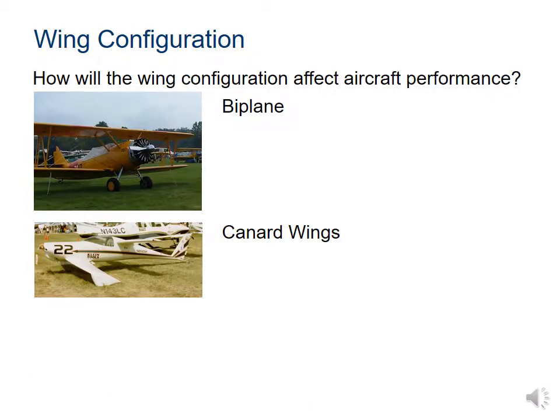Aside from wing position — low, medium, or high — we can also have different configurations. A biplane has two wings stacked one over the other. A canard — another French word — has a significant amount of lift from a secondary pair of wings, with a main wing in front and a second one right behind the cockpit, but it doesn't have a horizontal stabilizer on the empennage like a traditional airplane.